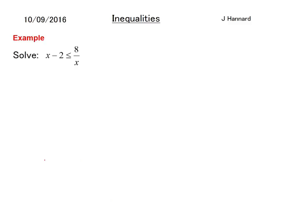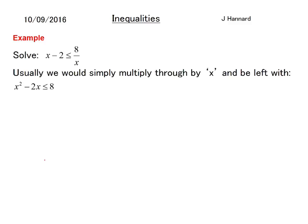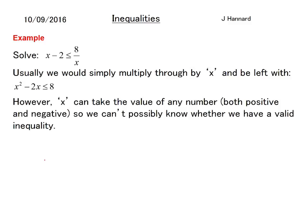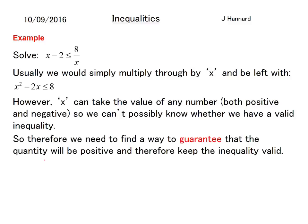So here's an example then. This is what we need to solve in FP2 and it'll probably become a little bit more clear now. Usually if you were solving this, you would just simply multiply through by x and be left with x squared minus 2x is less than equal to 8. That's a perfectly valid move if that x is a positive. But there's no possible way that we can know whether x is positive or negative because it can take any values. So we can't possibly know if it's a valid inequality. Therefore, we need to find a way to guarantee that the quantity will be positive and therefore keep the inequality valid.